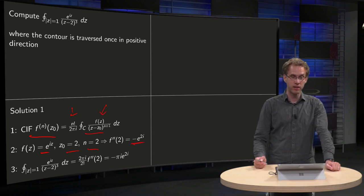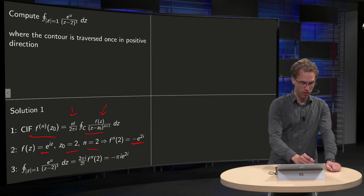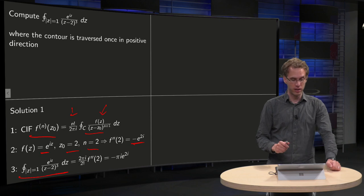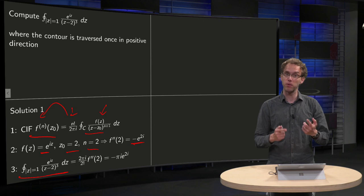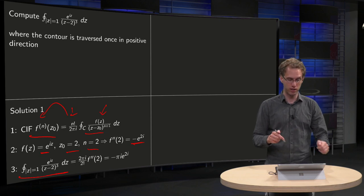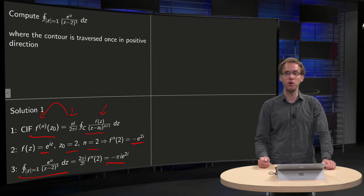Evaluated at 2 yields minus e to the power 2i. And then we can apply the integral formula to compute our integral. Bring the n factorial over 2 pi i to the other side, so we get 2 pi i divided by 2 factorial, which gives you minus pi i times e to the power 2i.